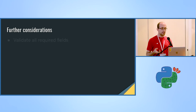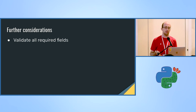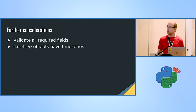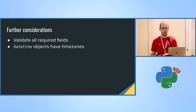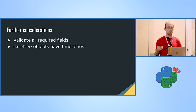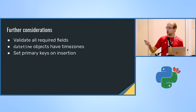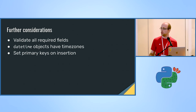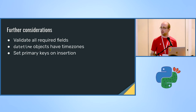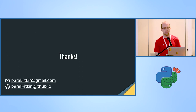Further considerations: this is not really a full ORM yet. You need to validate all required fields to make sure they have values, which should be trivial at this point. Datetime objects in Python are notorious and don't have a time zone, so you need to convert them to UTC and only then store them in the DB. You also need to set the primary key of every object after inserting it. These all aren't too hard to do, and by this point you should have enough information to move on. In about one day of work, you should be able to implement your own ORM for any database of your choice. That was my talk — thank you very much.